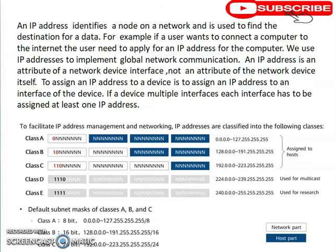An IP address identifies a node in a network. For example, if you want to connect your computer to the internet, you will need to apply for an IP address. Note that an IP address is an attribute of a network device interface, not an attribute of a network device itself.